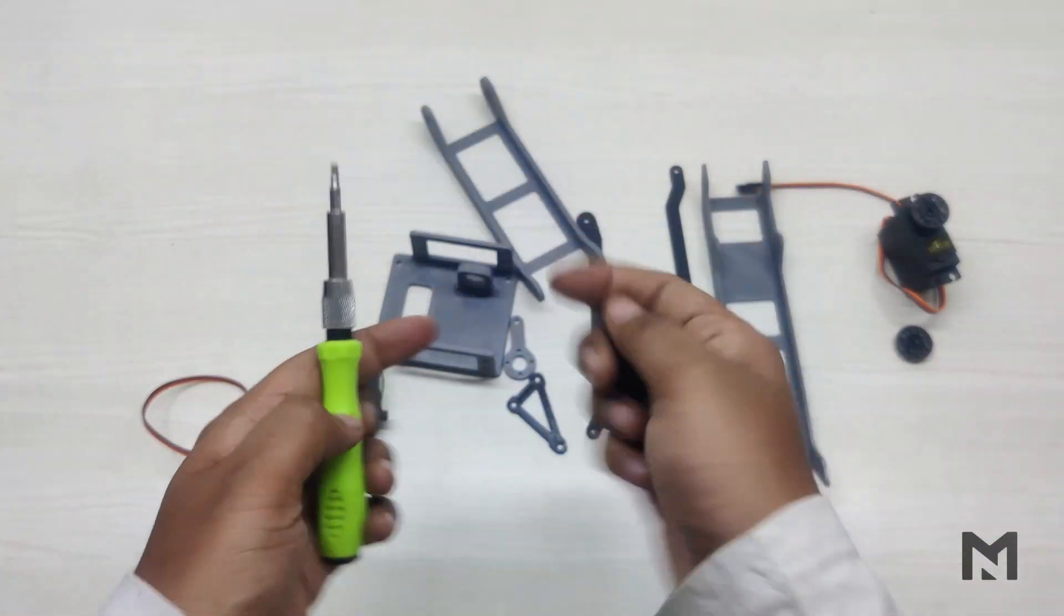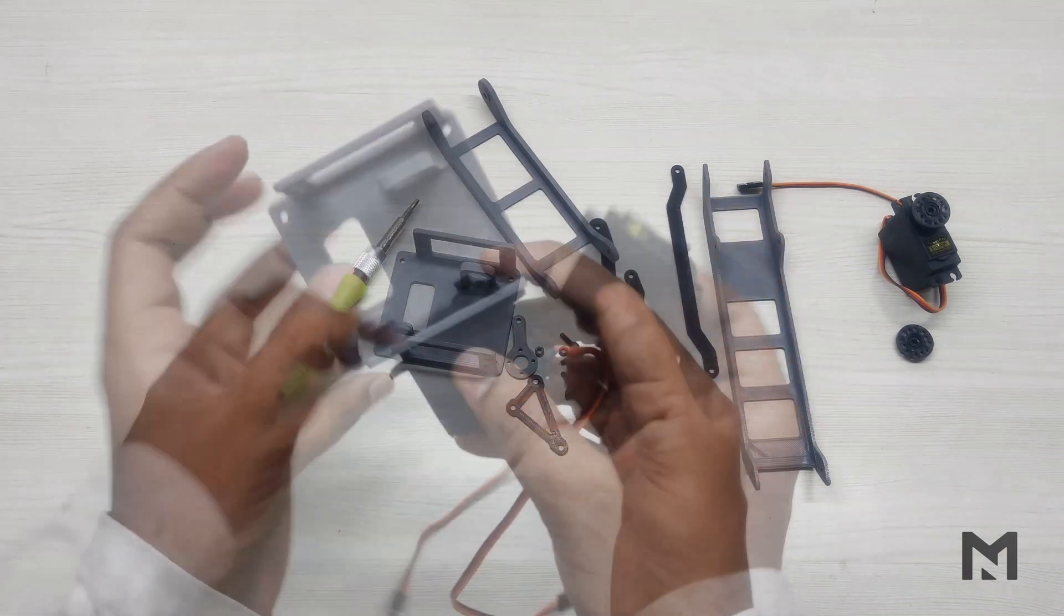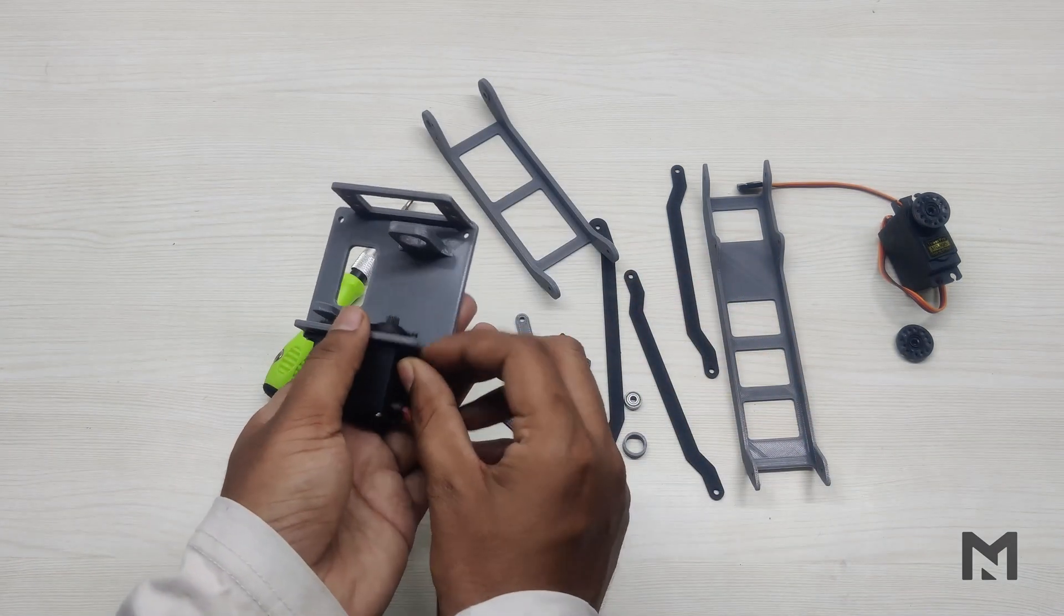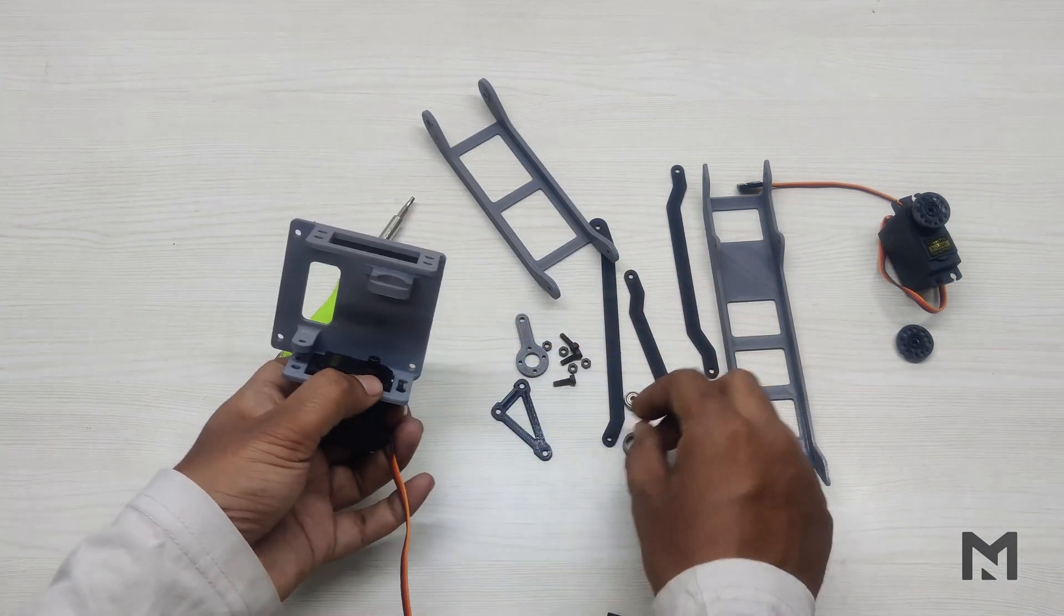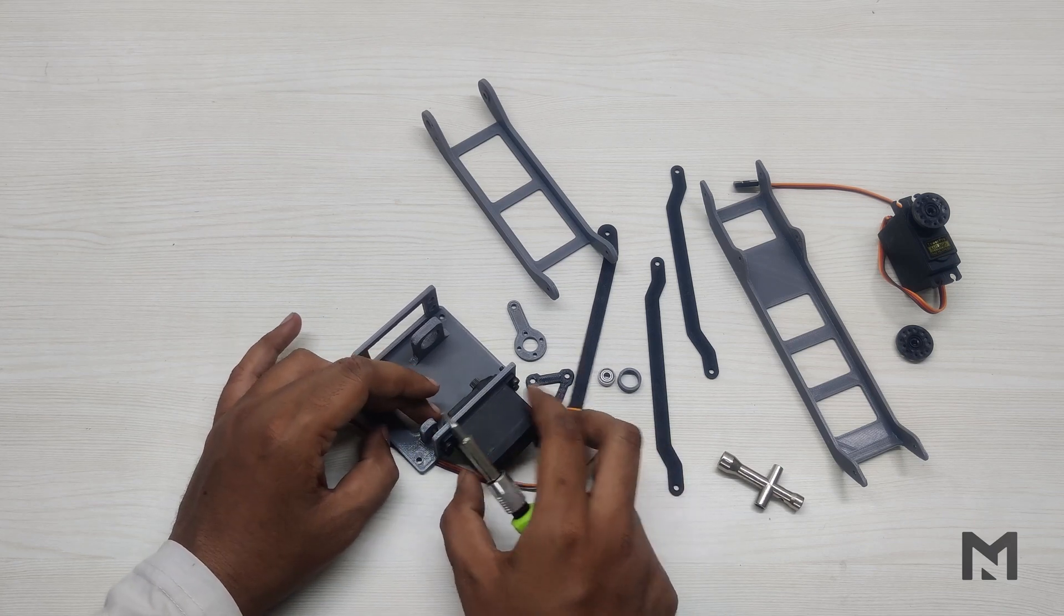I have used four M3 screws of 10mm length to connect the servo motor with the base. While connecting the servo motor, make sure to check its orientation. I wouldn't recommend using a high torque motor unless you have one, because we are using a plastic frame body and higher torque will be of no use.